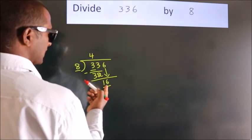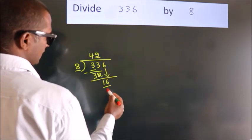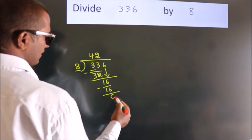When do we get 16 in the 8 table? 8 twos, 16. Now we subtract. We get 0.